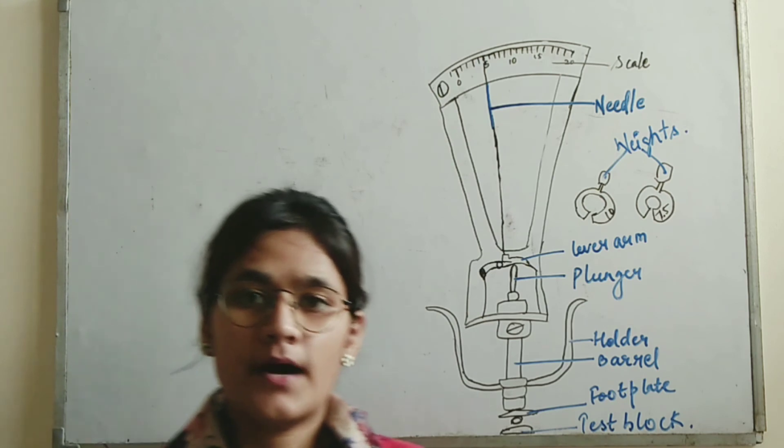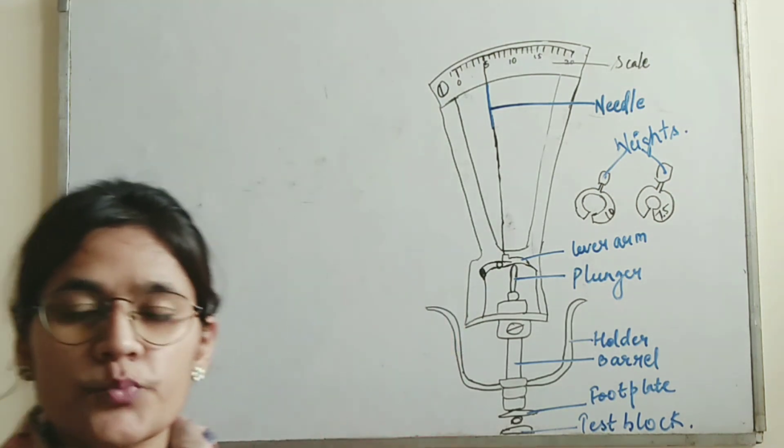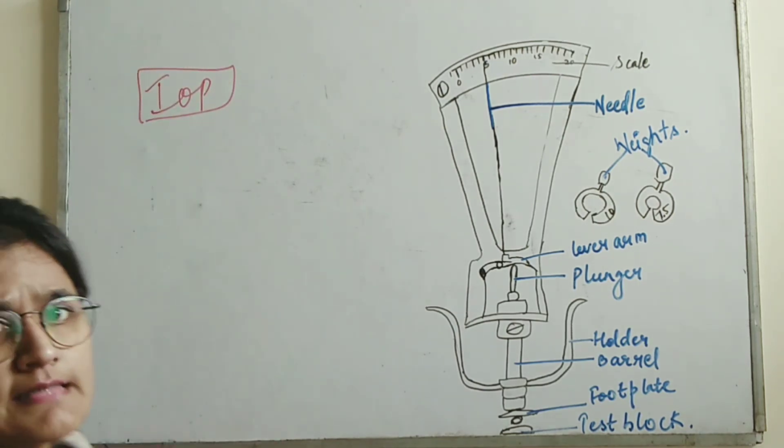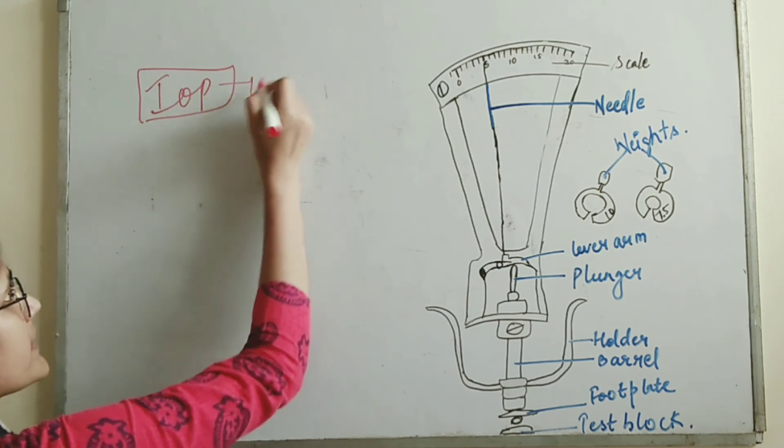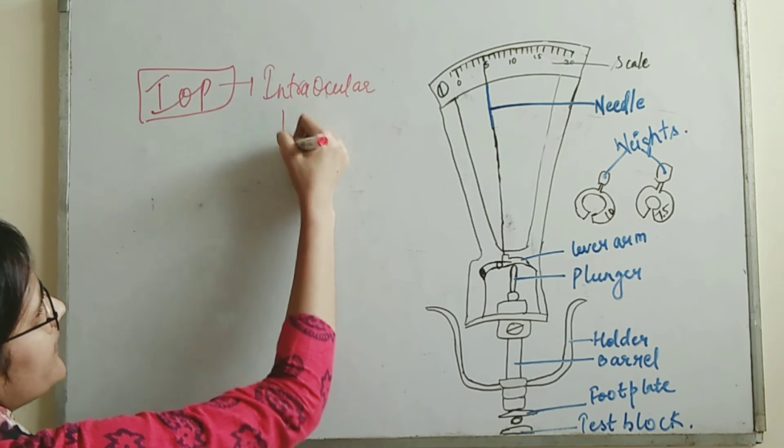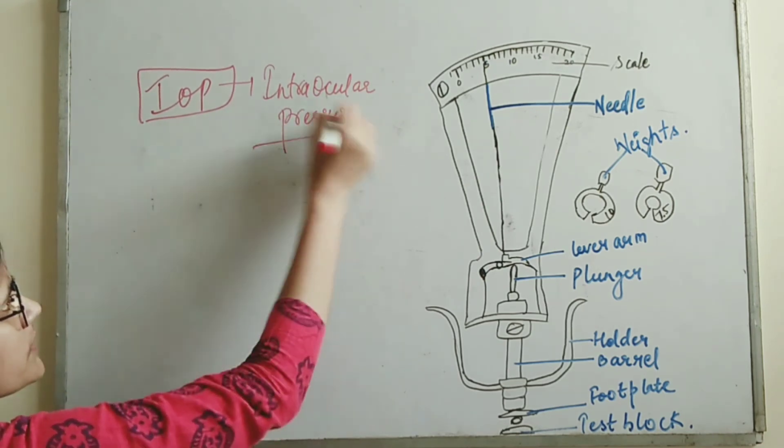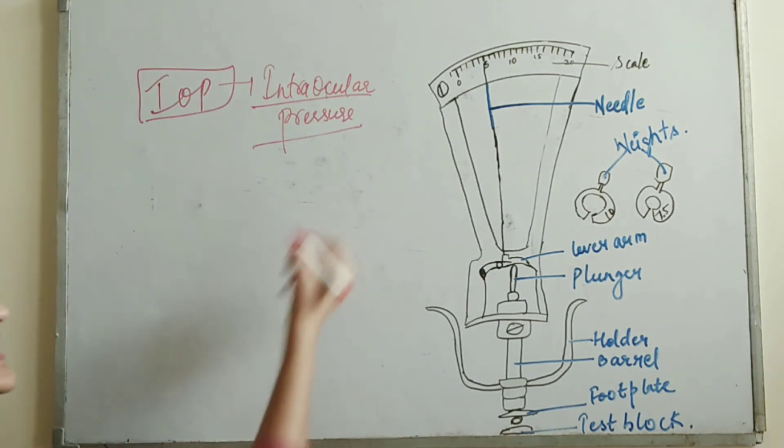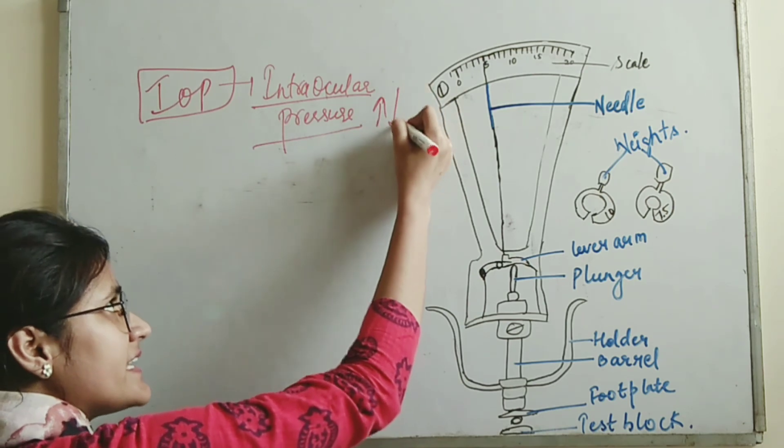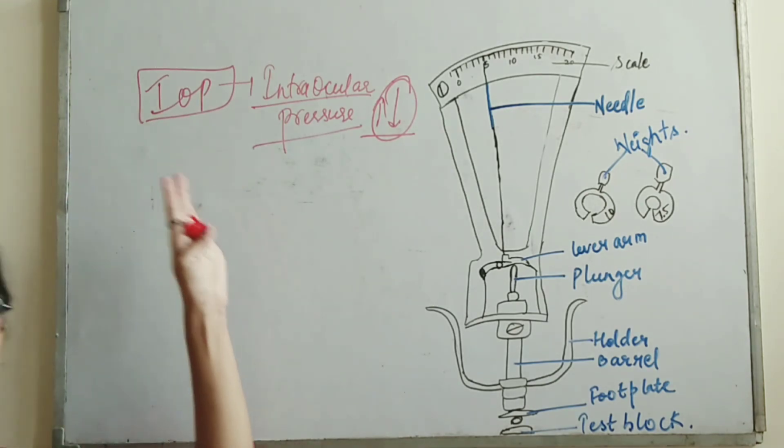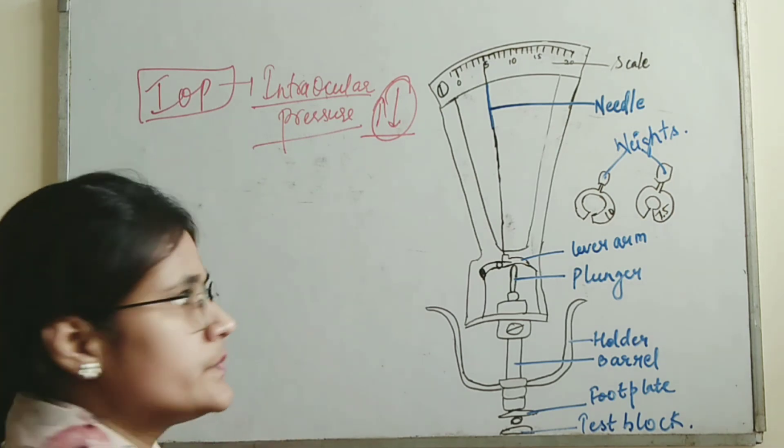Today we are going to learn about tonometry. It's an instrument which is used to measure the IOP of an eye. IOP is intraocular pressure, which is the eye pressure in our eye. If it gets increased or decreased, it will cause certain pathological diseases. So we need to understand how we can check the IOP of an eye.